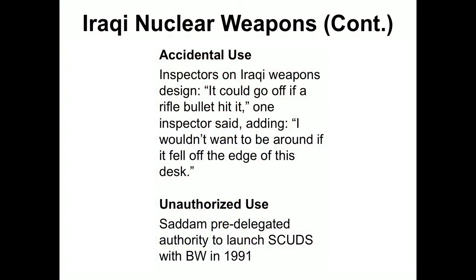The Iraqi nuclear weapons also posed a very severe danger. The inspectors who saw their weapons design were very concerned that if Iraq had gone forward, a single bullet hitting one might have caused it to go off. One inspector said they wouldn't want to be around it if it fell off the edge of a desk.